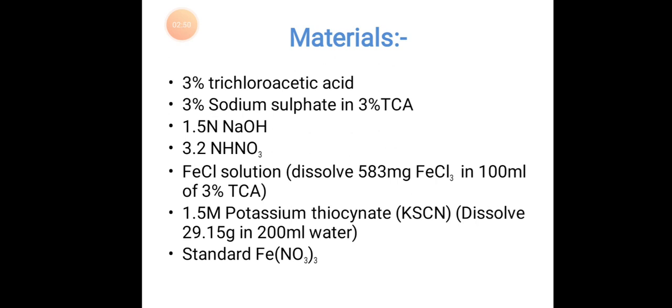FeCl solution, which can be prepared by dissolving 583 mg FeCl3 in 100 ml of 3% TCA. 1.5 molar potassium thiocyanate (KSCN), dissolve 29.15 grams in 200 ml water. Standard Fe(NO3) taken thrice.